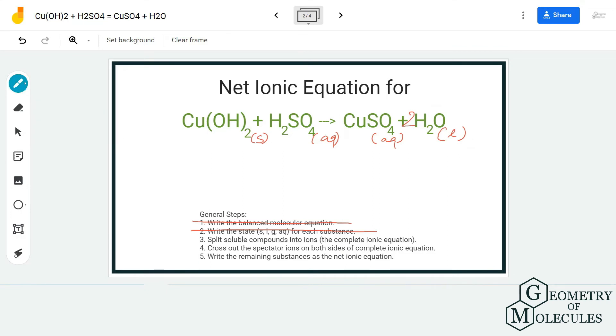The next step is to split the soluble compounds into ions. We write Cu(OH)₂ as is, then we have 2H⁺ plus SO₄²⁻. Note that the SO₄ group has a -2 charge, so don't forget to write that.